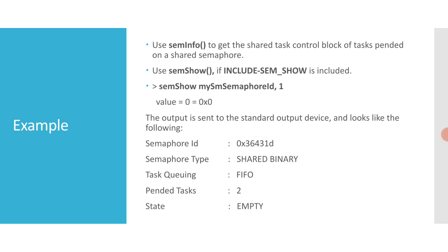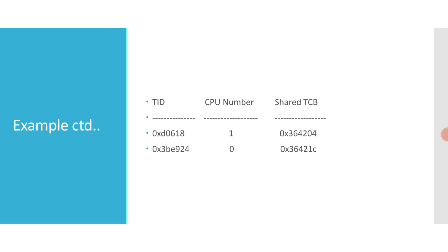When you call sem_show(my_sm_semaphore_id, 1), the output is sent to the standard output device and shows: semaphore ID, semaphore type (shared binary), task queuing (FIFO), pended tasks count (two tasks pended), and the state of the semaphore (empty). You also get TID, CPU number, and shared TCB address. If the value is zero it shows the summary; if it is one, it shows the details.